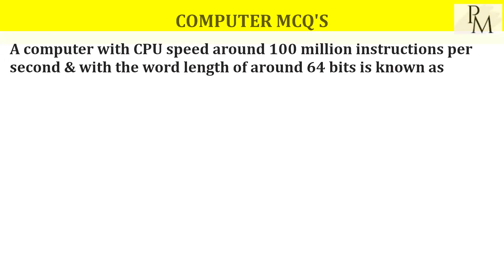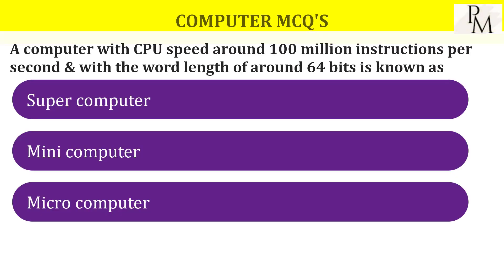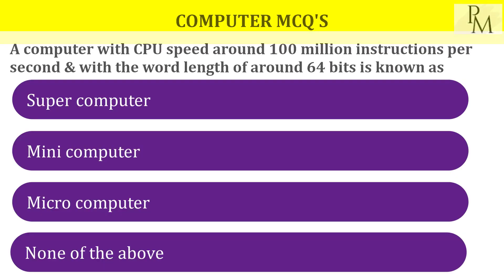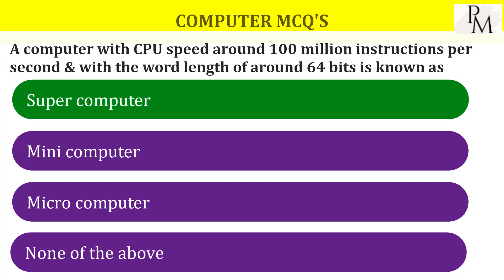A computer with CPU speed around 100 million instructions per second and with a word length of around 64 bits is known as what? We call it as a super computer, with speed around 400 million instructions per second.